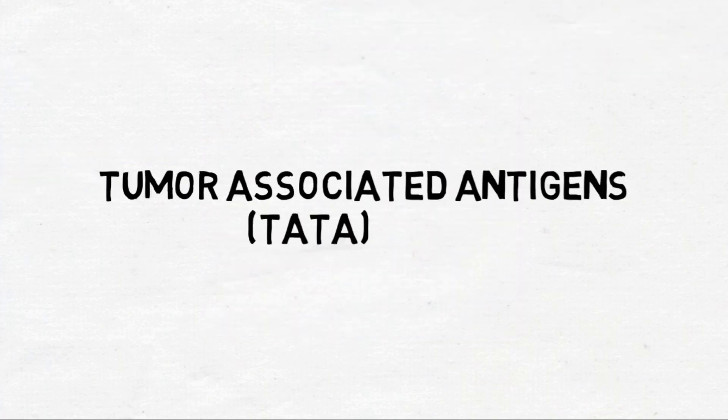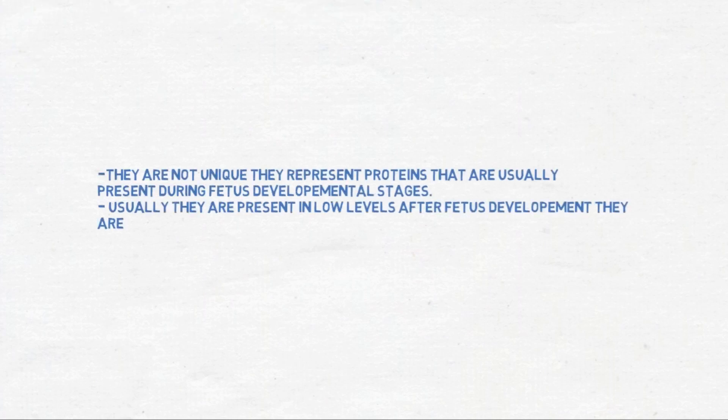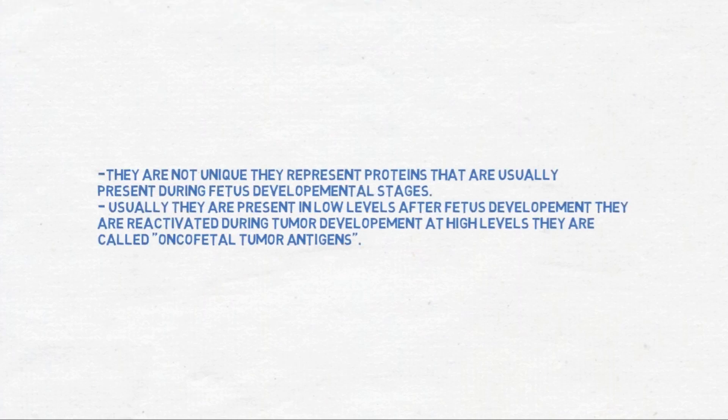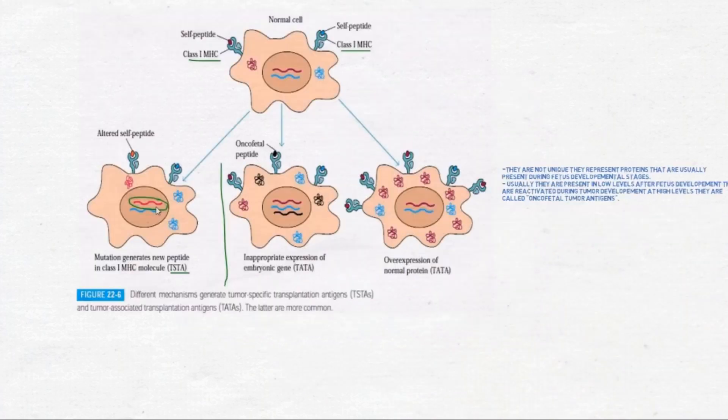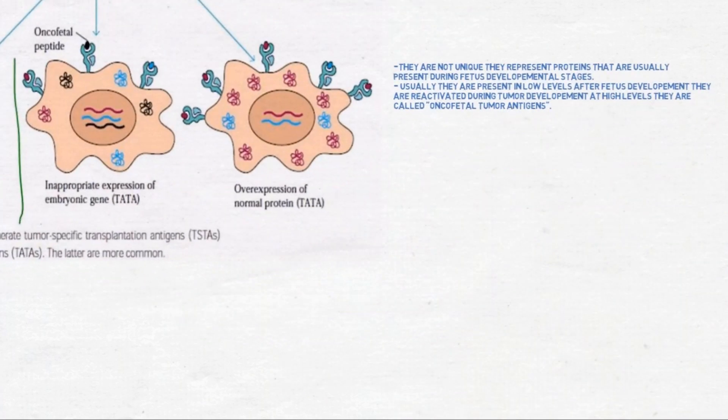The next type is tumor associated antigens. In contrast to tumor specific antigens, tumor associated antigens are not unique to cancer; instead, they represent normal cellular proteins displaying unique expression patterns. The image on the left side depicts the expression of embryonic proteins in adult cells, or overexpression of normal proteins, presented by MHC class 1 molecules.